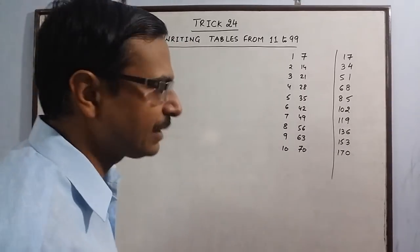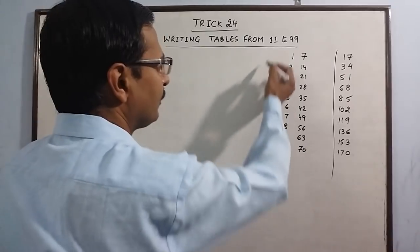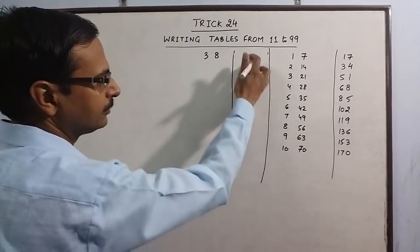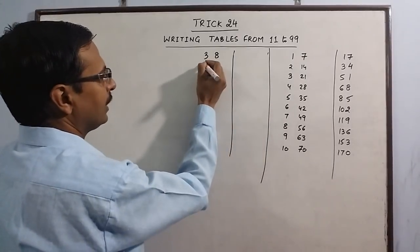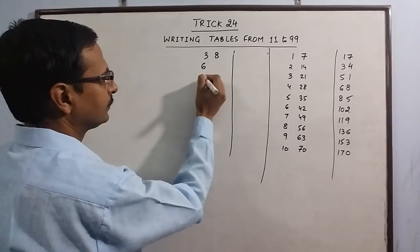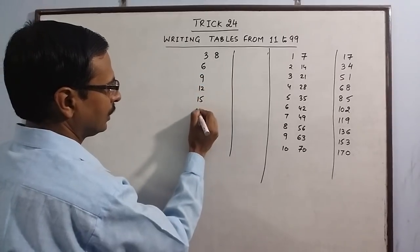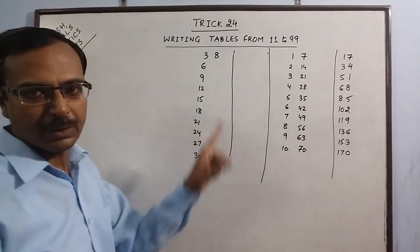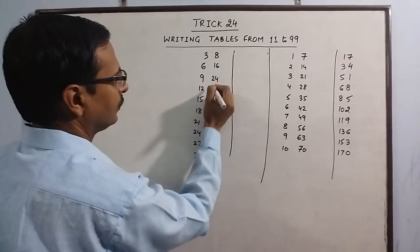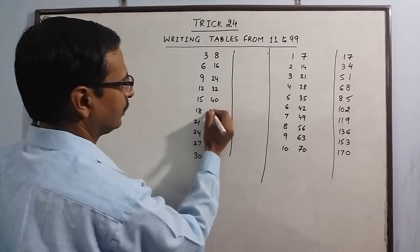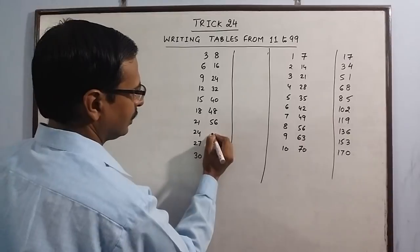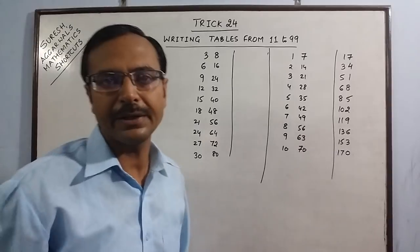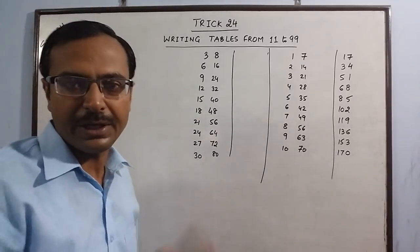So let us take one more number — a little bit higher — say 38. I will write the table of 3 first, and then the table of 8. These are the 2 tables which we need to remember for writing the table of 38: the 3 and 8 tables.